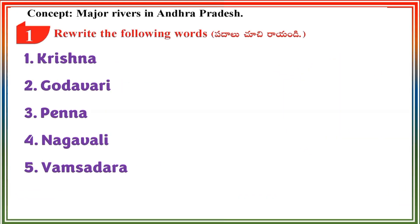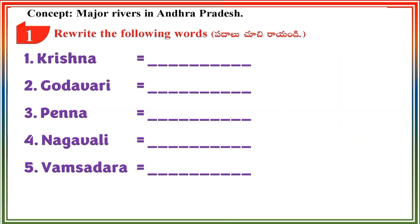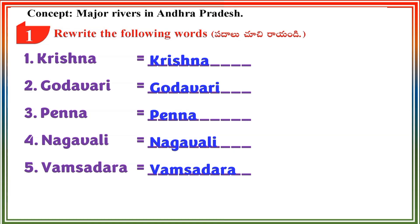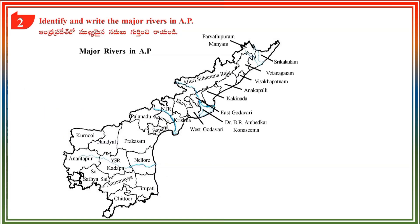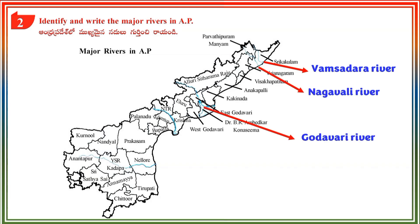Worksheet 5 — Concept: Major Rivers in Andhra Pradesh. Section 1: Rewrite the following words. Section 2: Identify and write the major rivers. Vamsadhara River. Nagavali River. Godavari River. Krishna River. Pennar River.